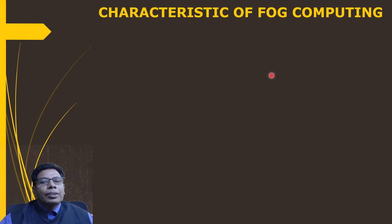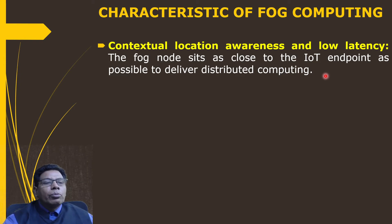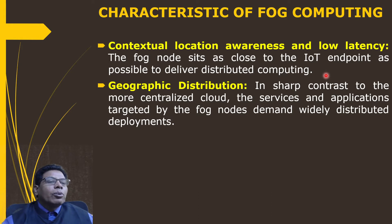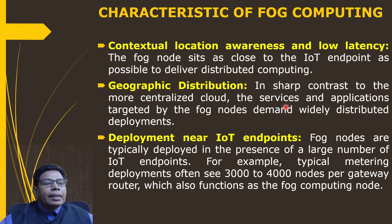The characteristics of fog computing are as follows. First, contextual local awareness and low latency: the fog node sits as close to the IoT endpoint as possible to deliver distributed compute, so computing is done locally without transferring data. Second, geographic distribution: in sharp contrast to the more centralized cloud, fog services and applications demand widely distributed deployments. Third, deployment near IoT endpoints: fog nodes are typically deployed in the presence of large numbers of IoT endpoints — typical deployments often see 3,000 to 4,000 nodes per gateway router, which also functions as the fog computing node.